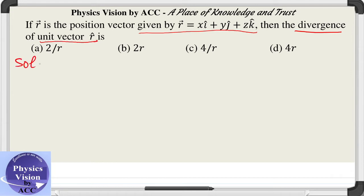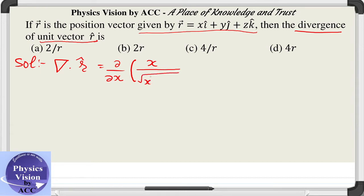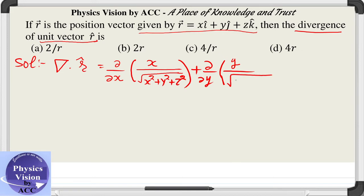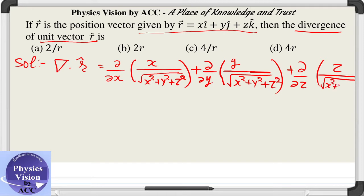We need to take the divergence of r cap, which is given by the partial derivative with respect to x of r cap — that is x divided by the square root of x squared plus y squared plus z squared — as the i-th component, plus the partial derivative with respect to y of y upon r, where r is the square root of x squared plus y squared plus z squared, plus similarly the partial with respect to z of z over the same factor.